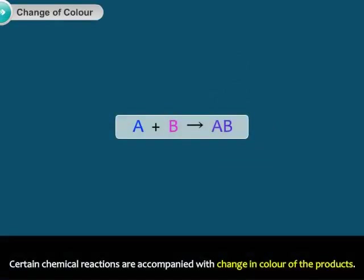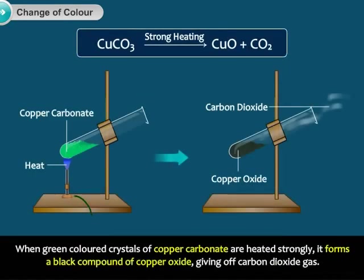Certain chemical reactions are accompanied with change in color of the products. When green colored crystals of copper carbonate are heated strongly, it forms a black compound of copper oxide, giving off carbon dioxide gas.